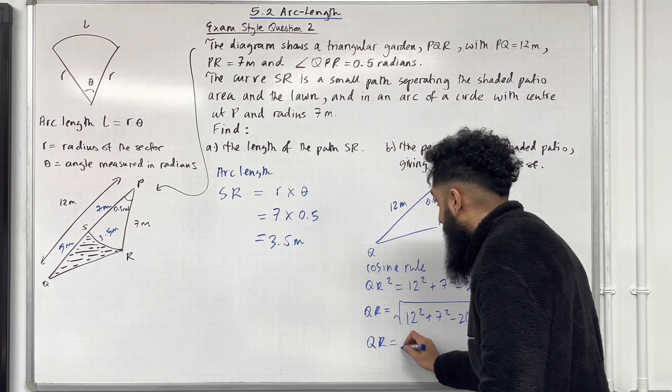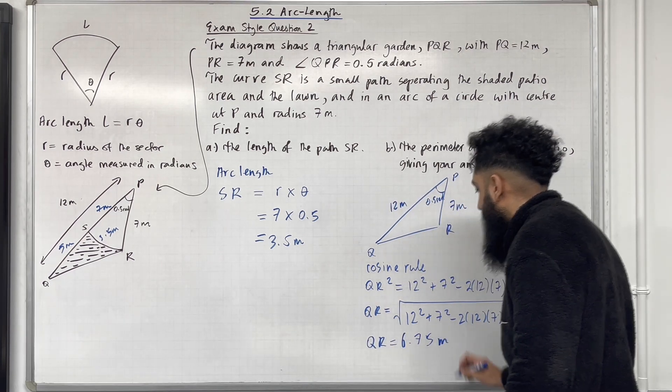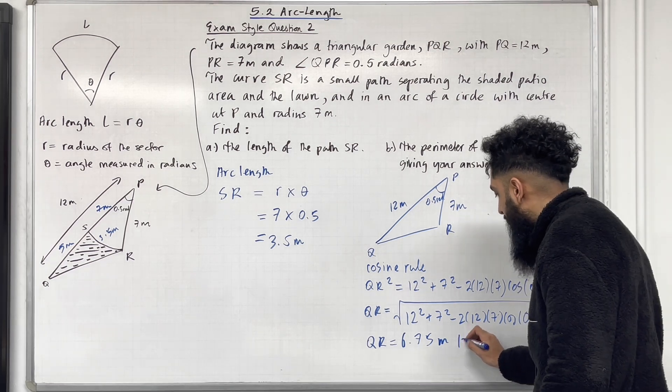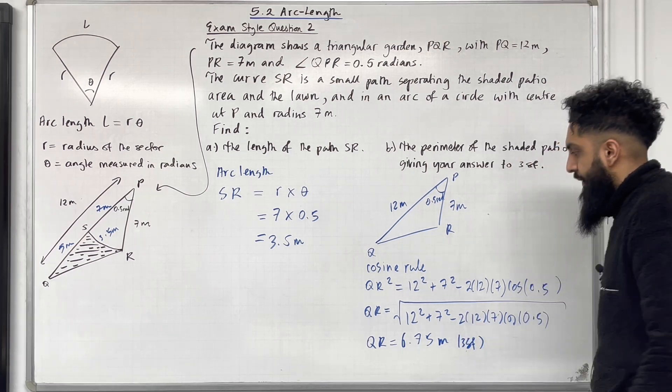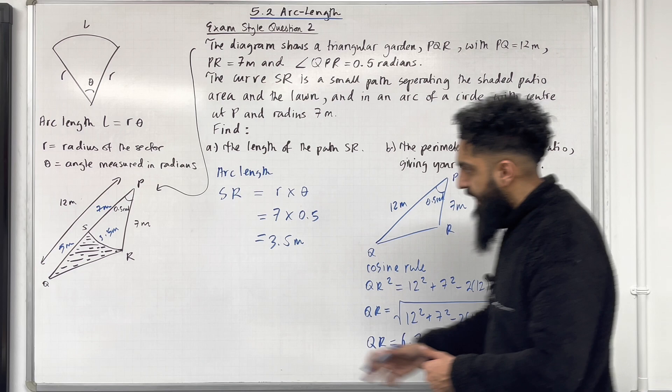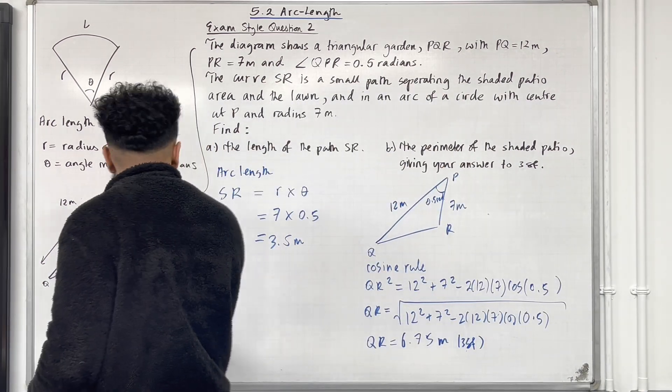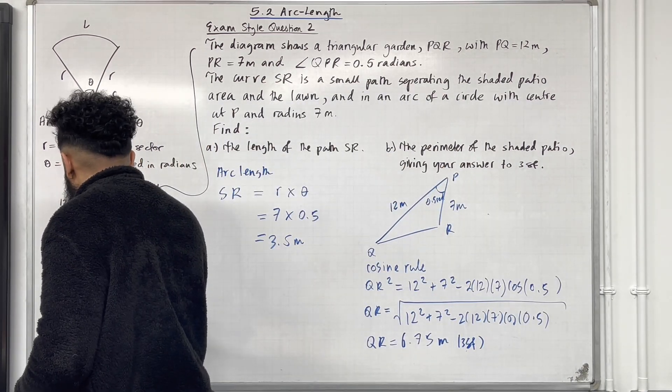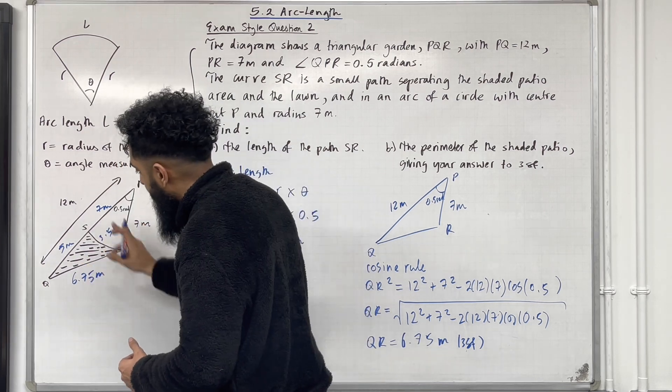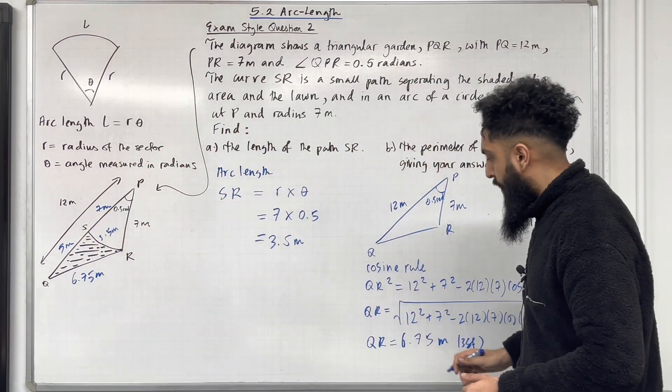So putting our calculator on radian mode we get that QR is equal to 6.75 metre to 3 significant figures. So we've got this part of it here QR which is 6.75 metre. Now we can calculate the perimeter of the shaded patio.